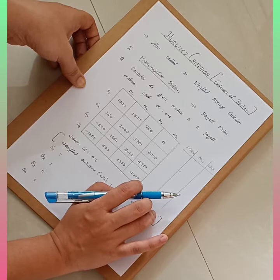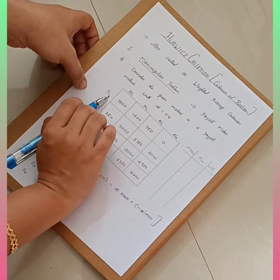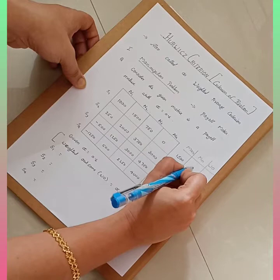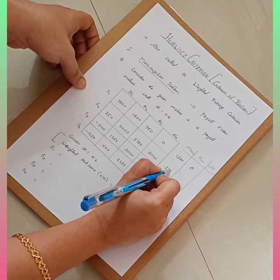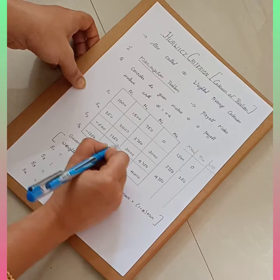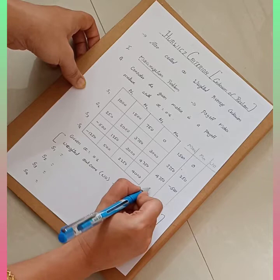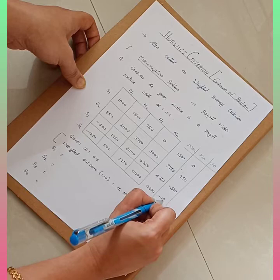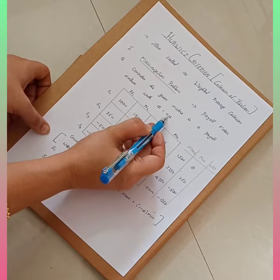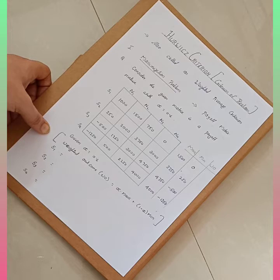For each and every alternative, identify the maximum and minimum value first, then we will use the formula. For S1, the values are 1000, 1500, 750, and 0 — so the maximum value is 1500 and the minimum value is 0. For S2, the maximum value is 3750 and the minimum value is 250. For S3, the maximum value is 4750 and the minimum value is minus 500. For S4, the maximum value is 4000 and the minimum value is minus 1250. Now in the question, alpha value is already given — that is 0.6.